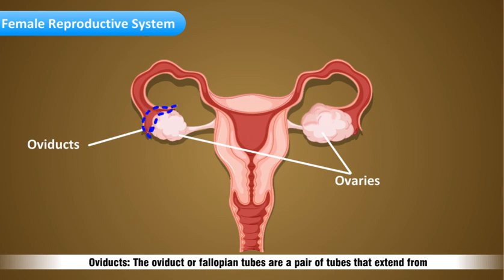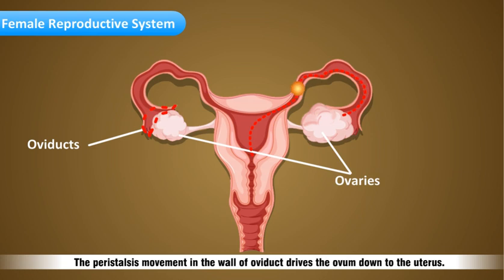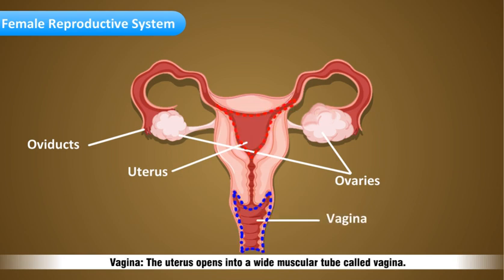Oviducts: the oviduct or fallopian tube are a pair of tubes that extend from the ovaries to the uterus. When a mature egg or ovum is released from a follicle, it is drawn into the oviduct. The peristaltic movement in the wall of the oviduct drives the ovum down to the uterus. Uterus: it is a broader muscular chamber which receives the ovum and contains the developing fetus. Vagina: the uterus opens into a wide muscular tube called vagina.